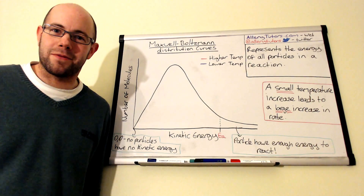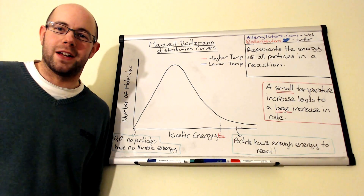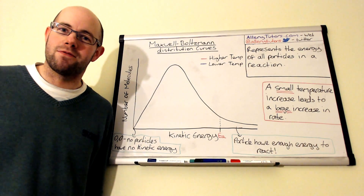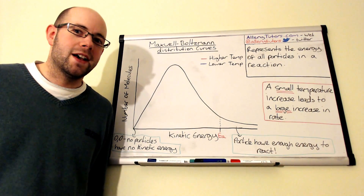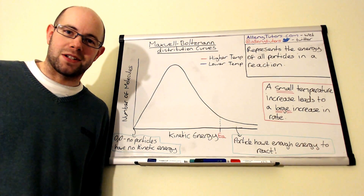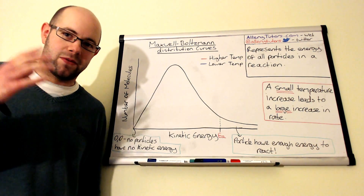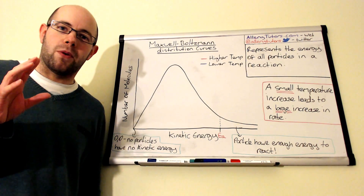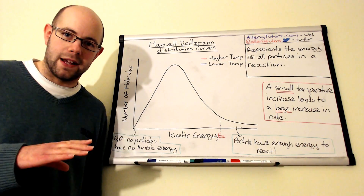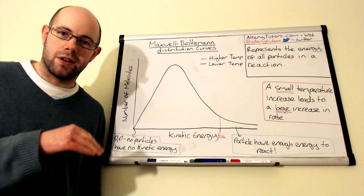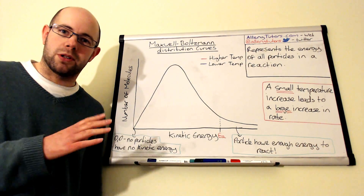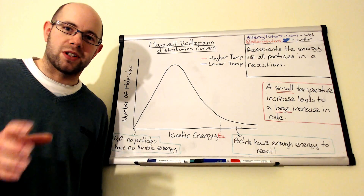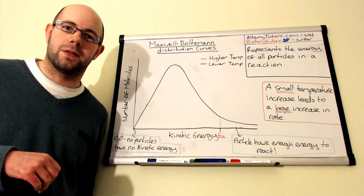Hi everyone, my name is Chris Harris and I'm from AlleryTutors.com. In this video we're going to look at the Maxwell-Boltzmann distribution curves. It sounds absolutely horrendous but it's not that bad actually, and it links in with the kinetics topic — it's to do with the amount of energy a particle has and how quickly those particles move. We're going to look at the curve, two different scenarios at low and high temperature, and explain the features of the curve, because these are really popular in the exam.